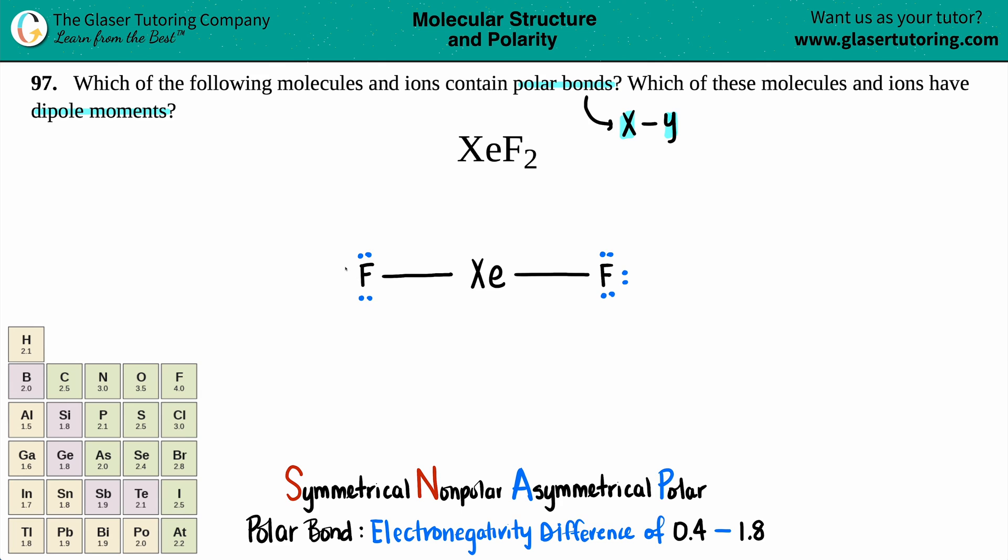And then xenon had a - xenon's a noble gas, so it has eight valence electrons. It used two to make that bond, so I have six left. So two, four, six.